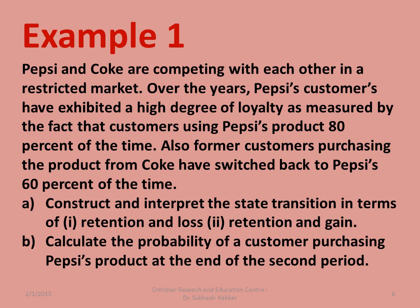The first example: Pepsi and Coke are competing in a restricted market. Over the years, Pepsi's customers have exhibited a high degree of loyalty — customers use Pepsi's product 80% of the time. Also, former customers who purchased from Coke have switched back to Pepsi 60% of the time.